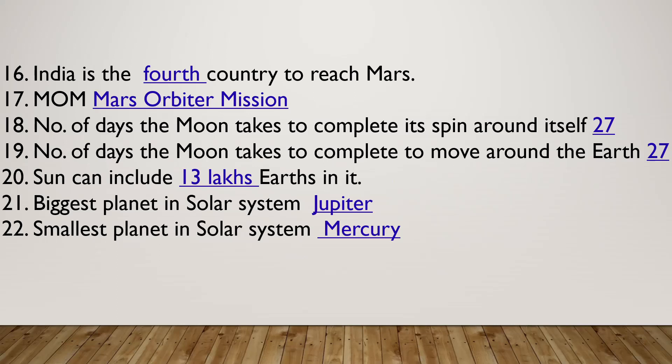The Sun can include 13 lakh Earths in it. The biggest planet in the solar system is Jupiter. The smallest planet is Mercury. The Earth is the fifth largest planet in the solar system.